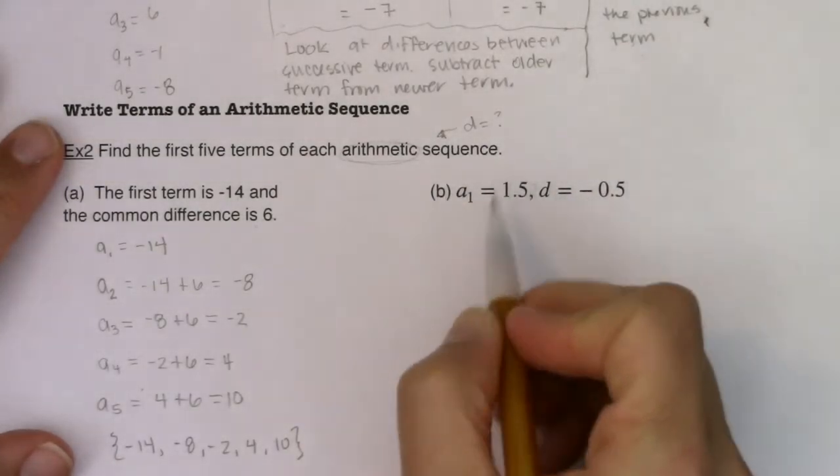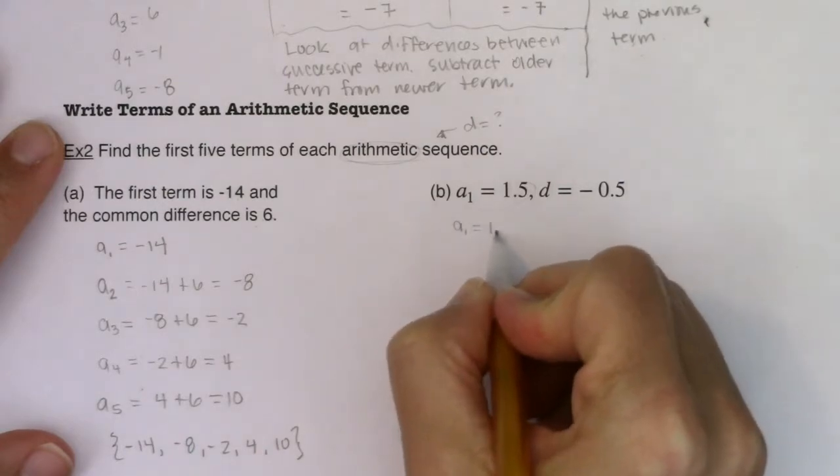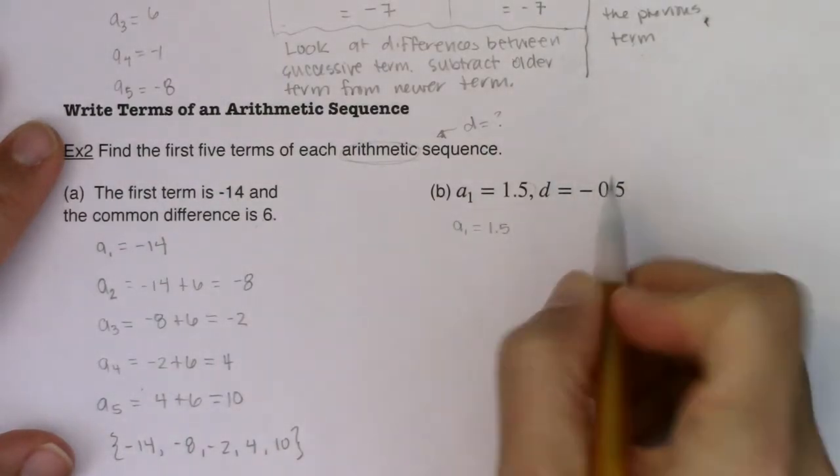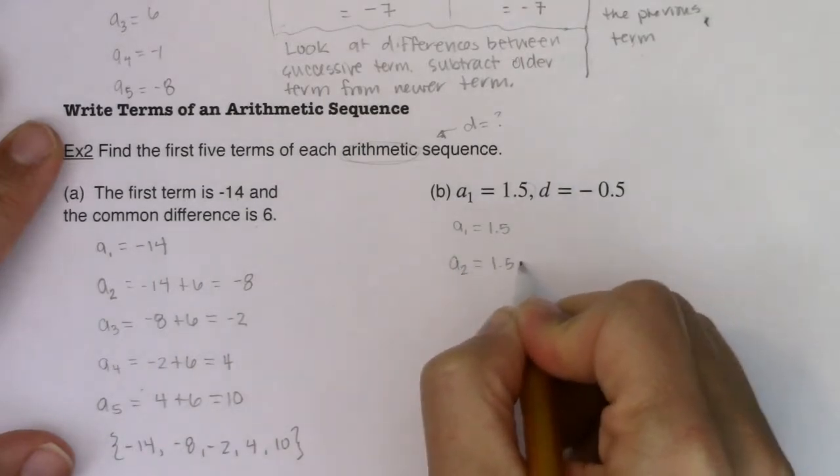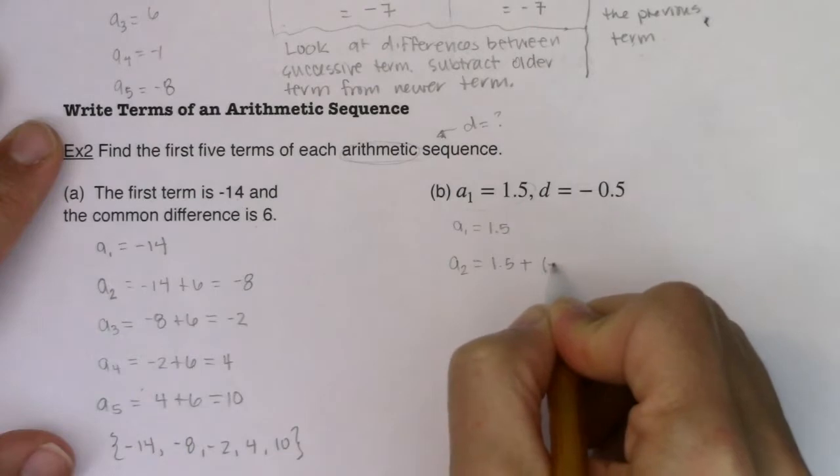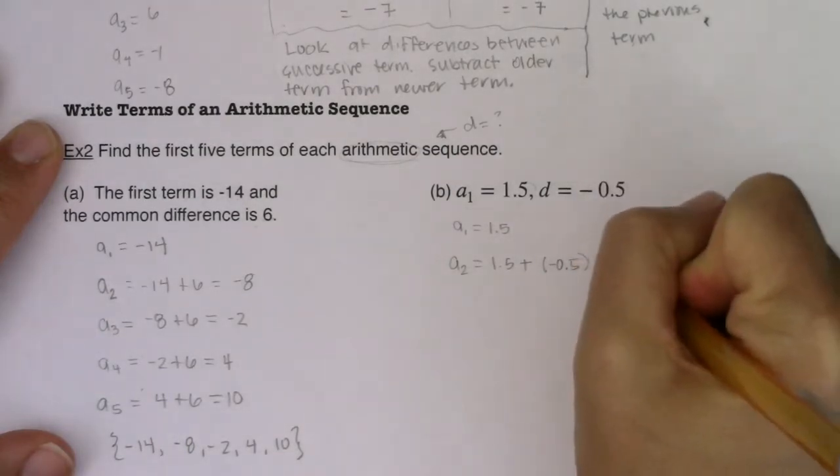So here, they're straight up telling me A sub one is 1.5. So I have A sub one, 1.5. Now take note that my difference is negative. So I'm still going to add that difference to A sub one. But when you add a negative number, you're really just subtracting. So A sub two is one.